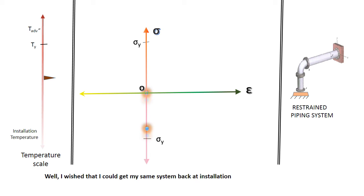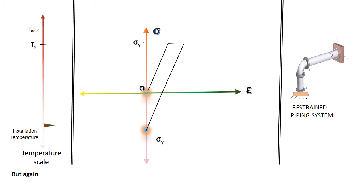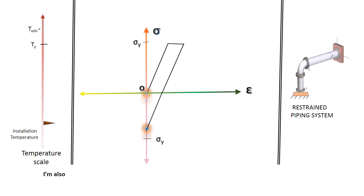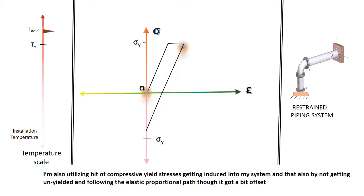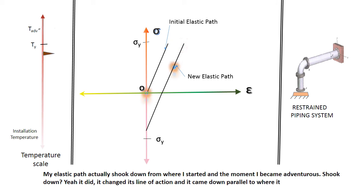Well, I wished that I could get my same system back at insulation temperature with zero stress and zero strain, but I think I won't be able to get it back ever now in the same initial stress-strain state. But again, what I could get is that my system was seeing much higher temperature, that is adventurous temperature compared to TY, and that's okay. I'm making my system operate elastically at higher temperature and that's better. I'm also utilizing bit of compressive yield strength getting induced into my system and that also by not getting unyielded and following the elastic proportional path though it got a bit offset from its original. My elastic path actually shook down from where I started the moment I became adventurous. It changed its line of action and it came down parallel to where it was earlier.